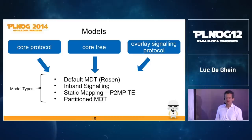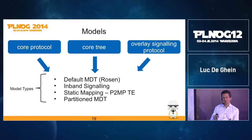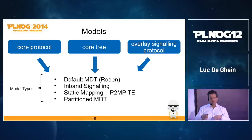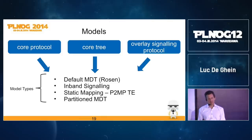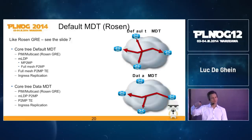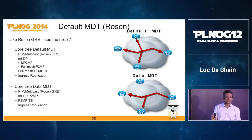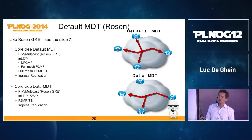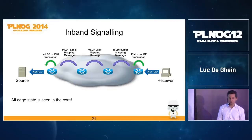Bringing together all the pieces — core protocols (MLDP, point-to-multipoint TE, ingress replication), core tree types (point-to-multipoint, multipoint-to-multipoint), and overlay signaling (PIM or BGP) — we end up with four types of deployment models: default MDT (which is another name for Rosen), in-band signaling (only with MLDP), static mapping, and partition MDT. The default MDT or Rosen model is the same as before, but now instead of only PIM in the core you can choose between MLDP, point-to-multipoint TE, or ingress replication. With MLDP you have two choices: build the default MDT as one multipoint-to-multipoint tree or as a full mesh of point-to-multipoint trees, and you still have the data tree option with all four core protocols.